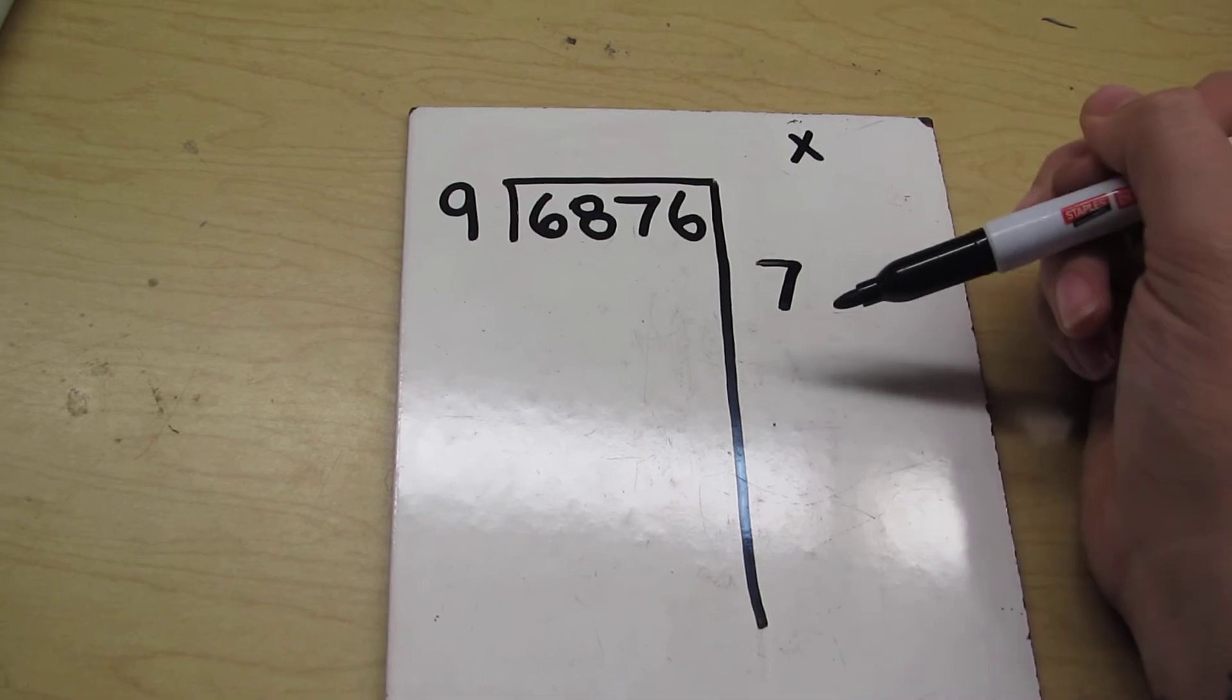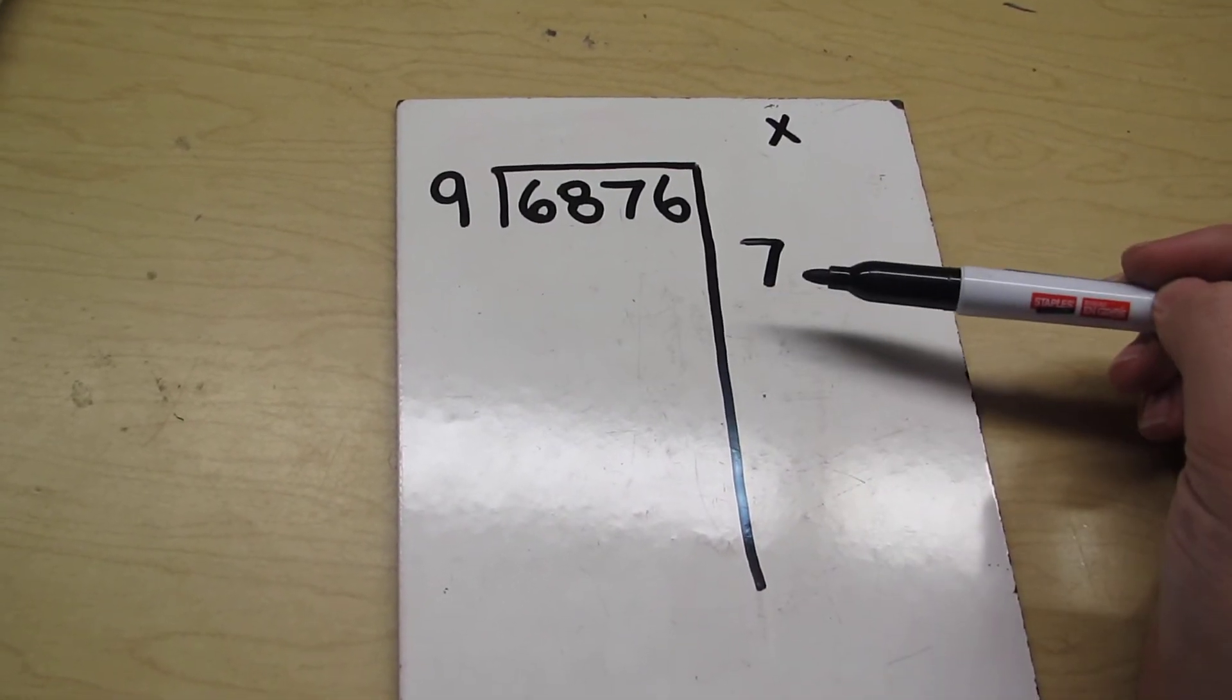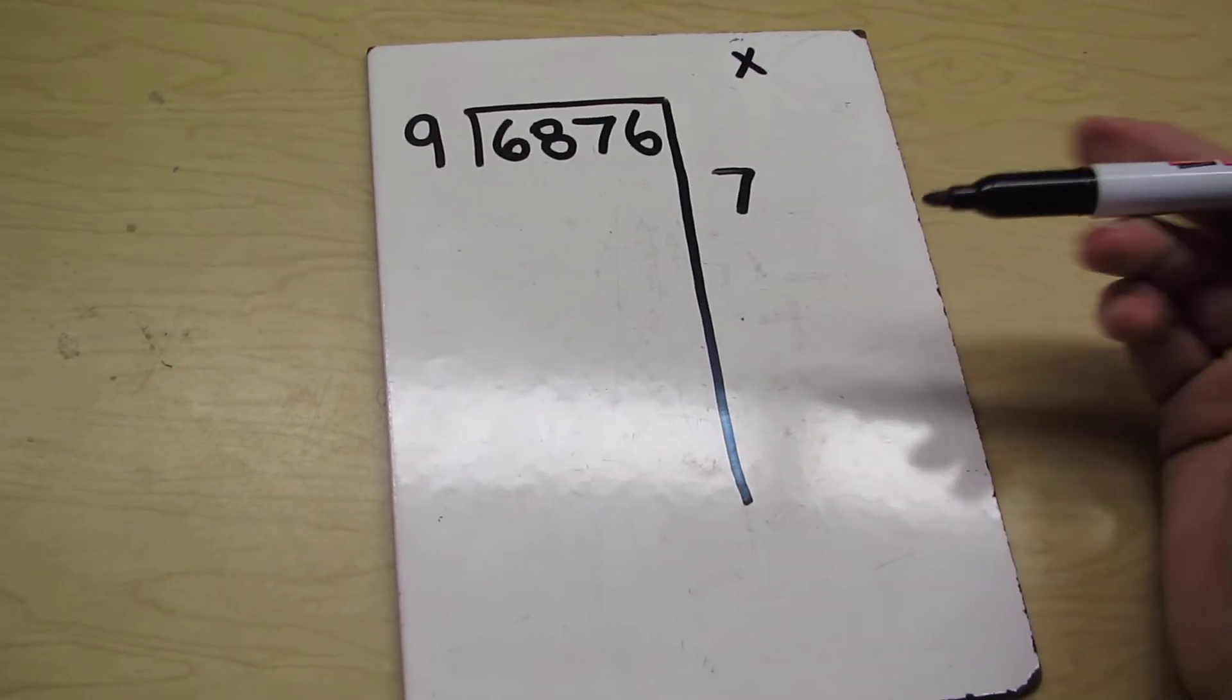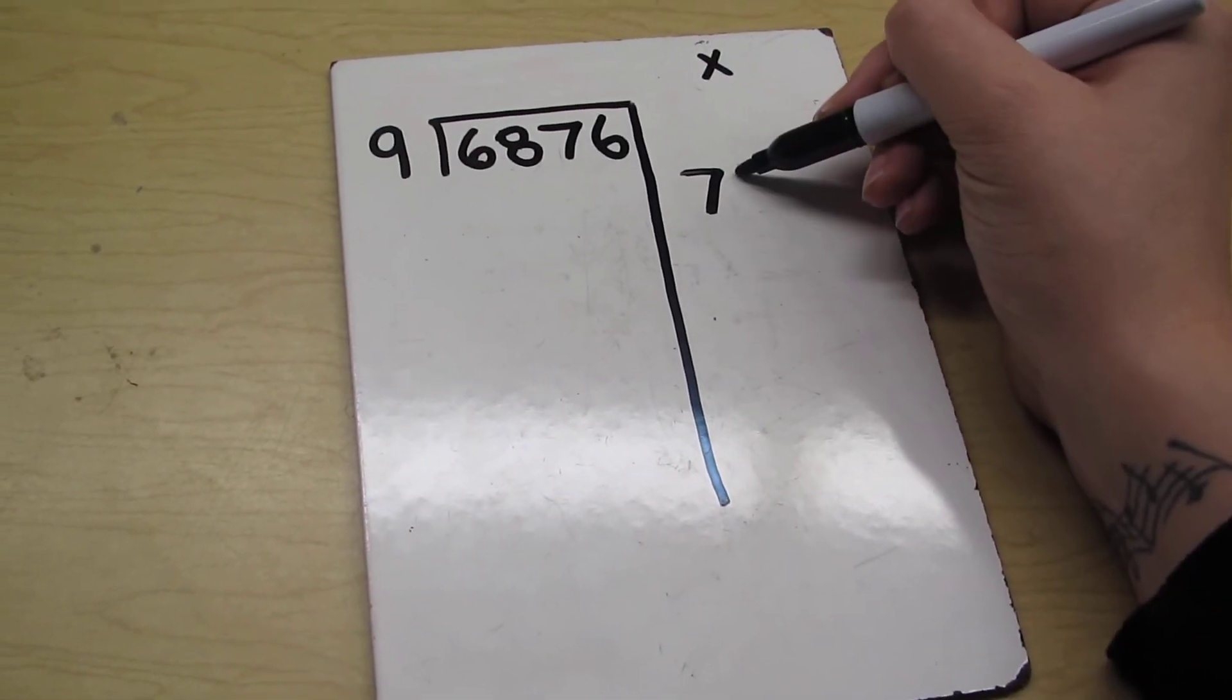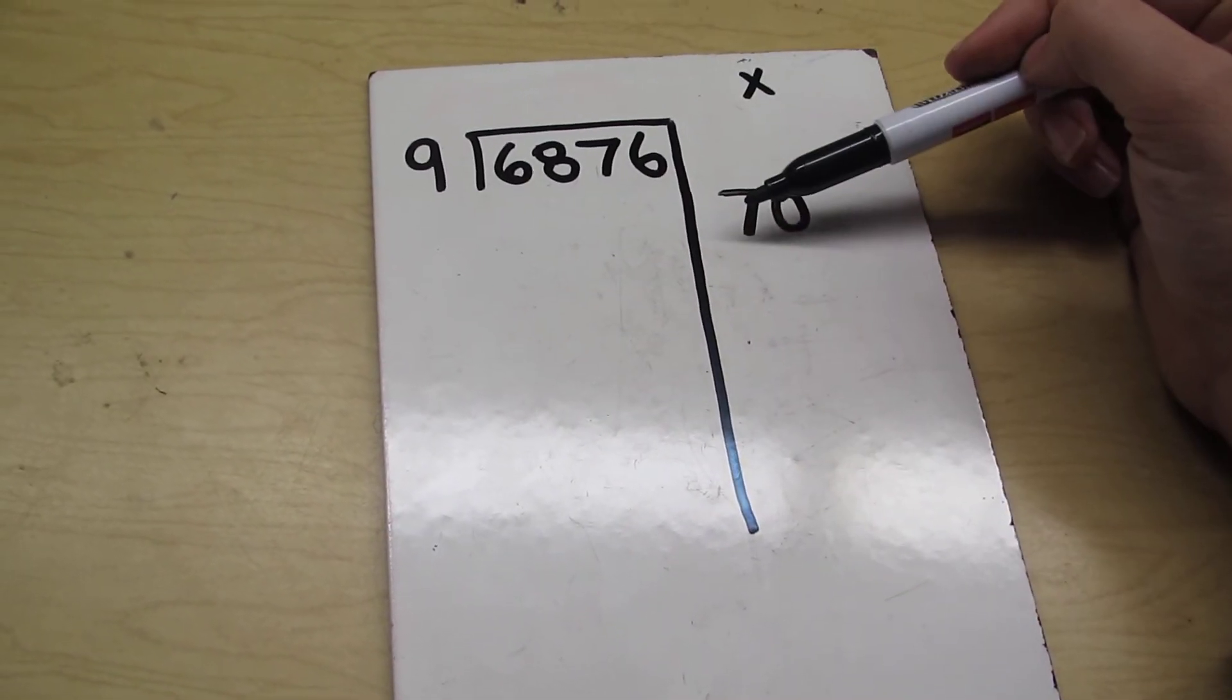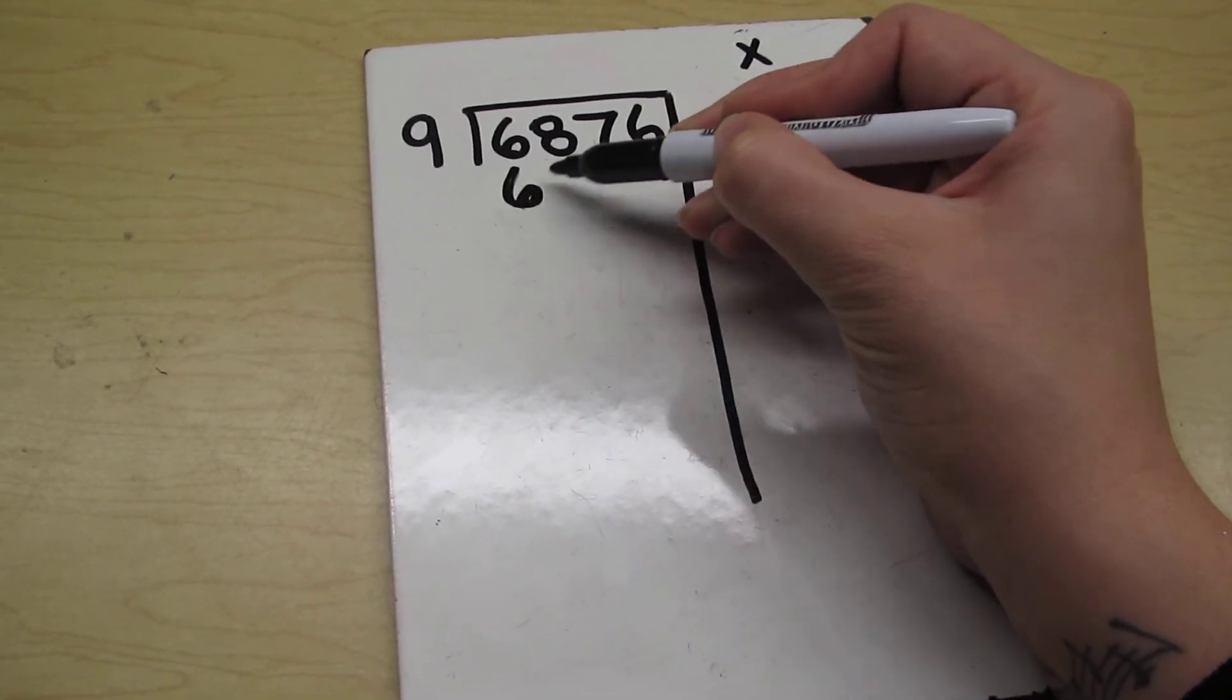Now I know that 9 times 7 is 63, but I need to make that number way bigger than that if I want to get to 6,800. So now I think about the trick about adding the zeros. Well, if I know that 9 times 7 is 63, I add a zero to it, it is 630.